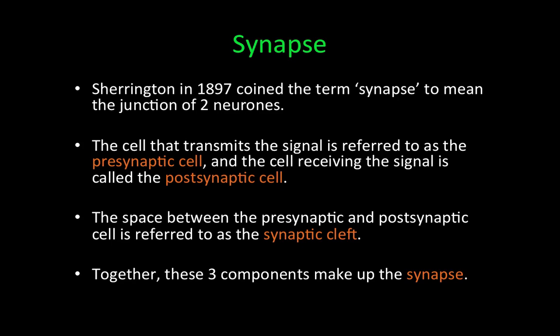Let's talk a little bit about the synapse. In 1897, Sherrington coined the term synapse to mean the junction of two neurons. The cell that transmits the signal is referred to as the presynaptic cell, and the cell receiving the signal is called the postsynaptic cell. The space between the presynaptic and postsynaptic cell is referred to as the synaptic cleft.